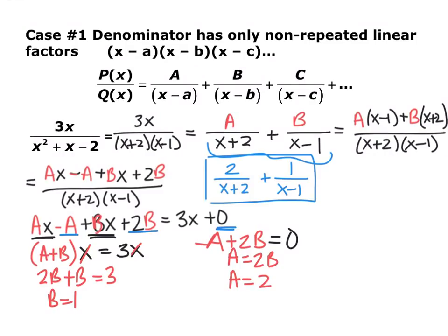Since b equals 1, a equals 2. So the fraction 3x over x squared plus x minus 2, written as a sum of two fractions, is 2 over x plus 2 plus 1 over x minus 1. The process: factor the denominator completely, each unique linear factor becomes its own denominator with a constant numerator, give each fraction what it needs for a common denominator, set numerators equal, and solve.